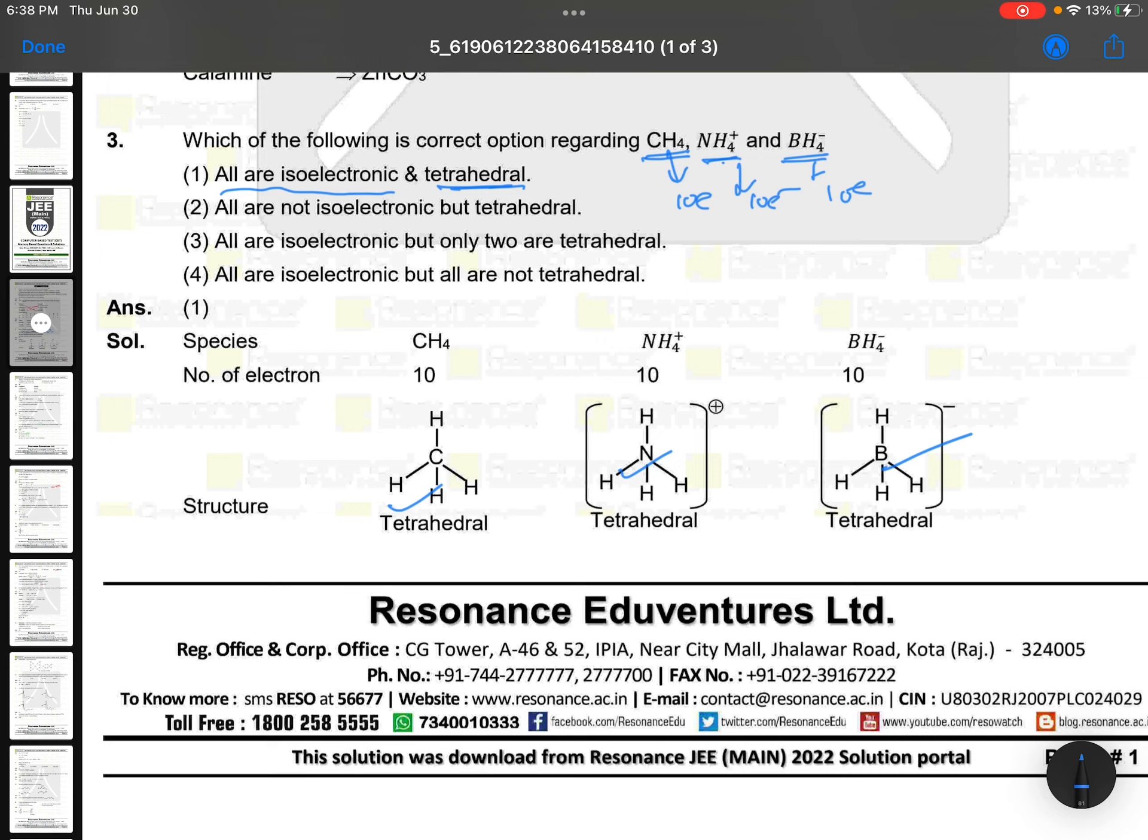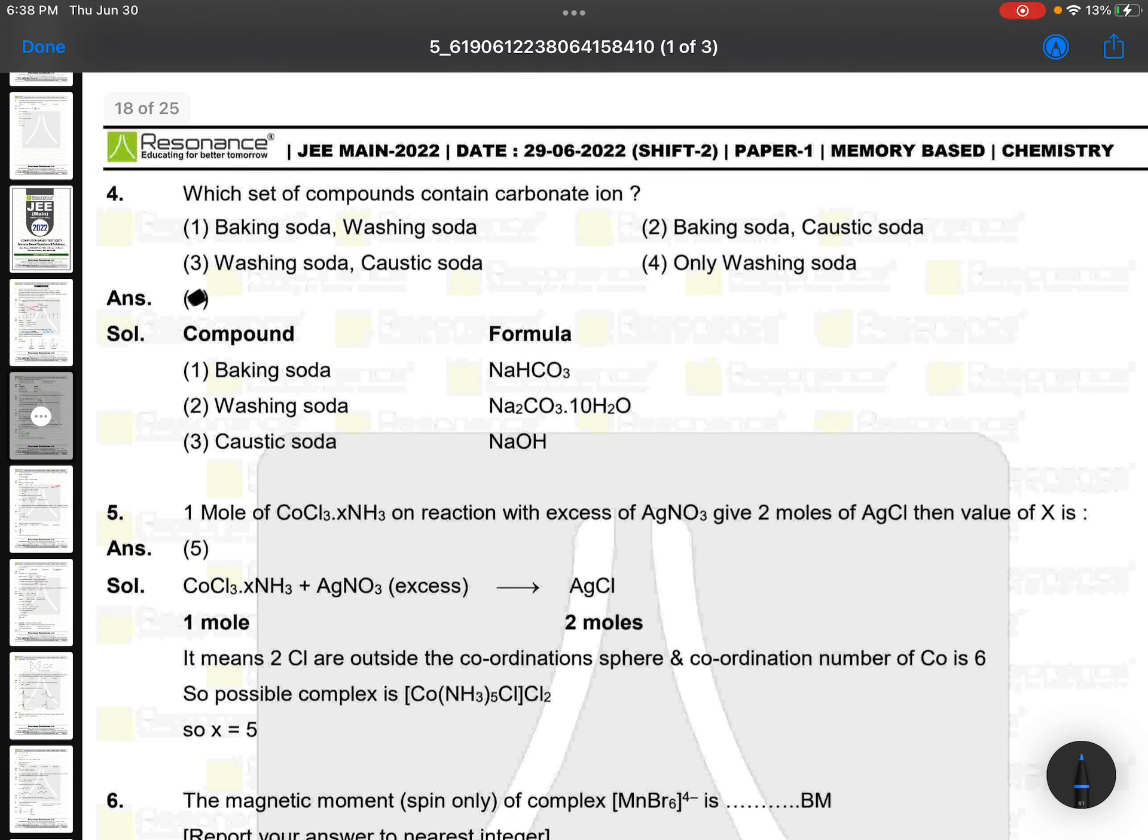Which set of compounds contain carbonate ion? Carbonate means CO3²⁻. CO3²⁻ is available in washing soda only. This is bicarbonate HCO3⁻ and here OH⁻, so only washing soda.